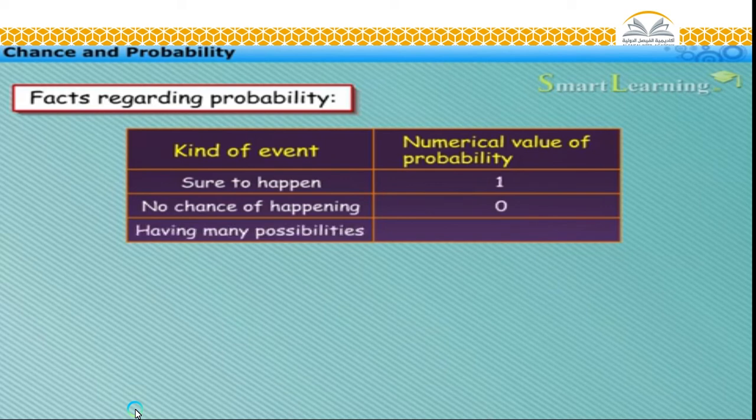And events that have many possibilities can have probability between zero and one.